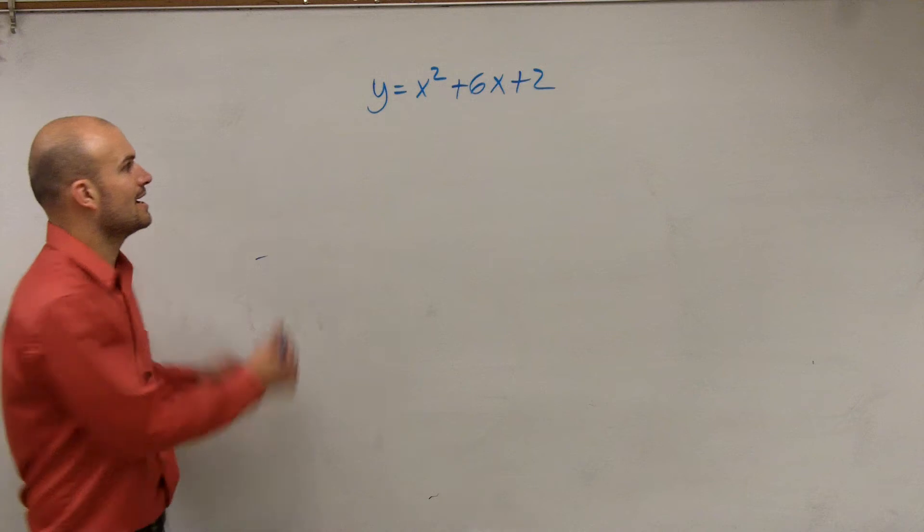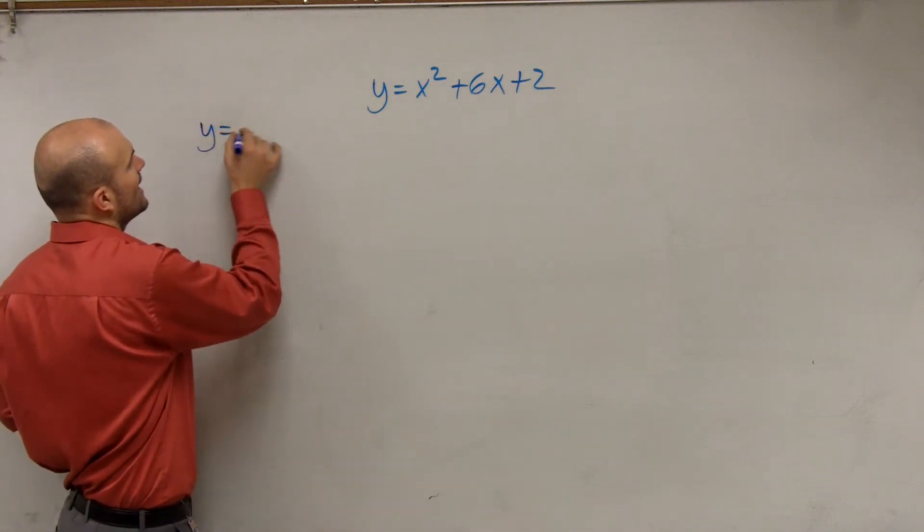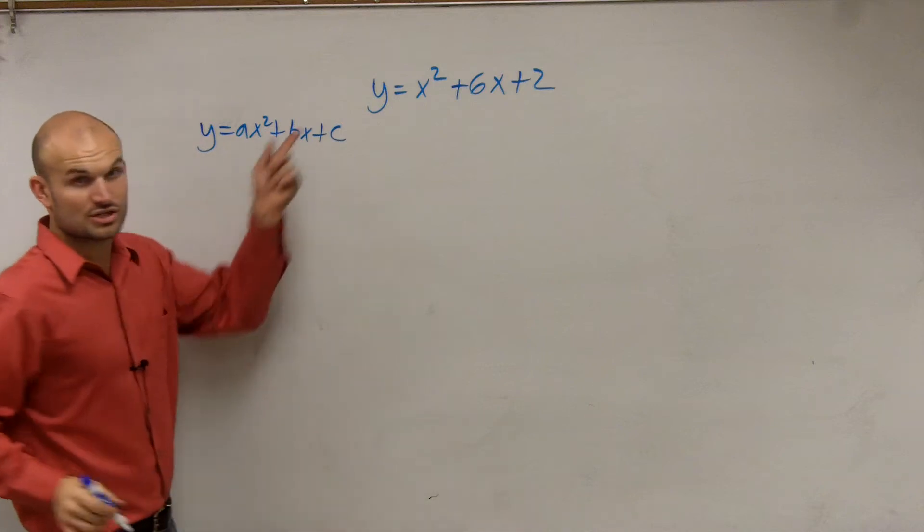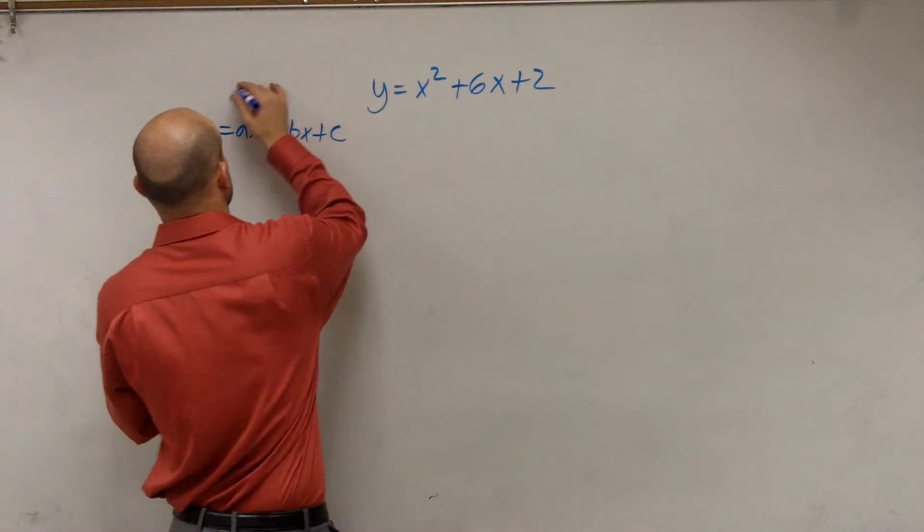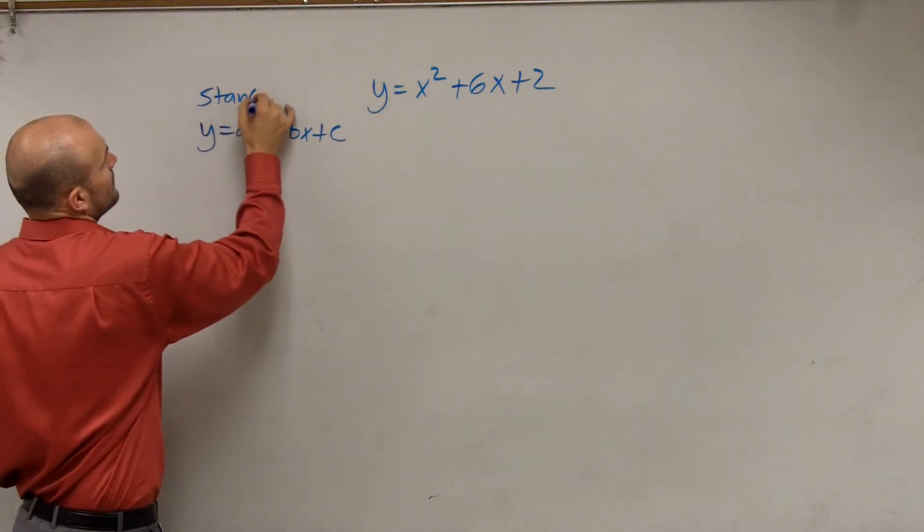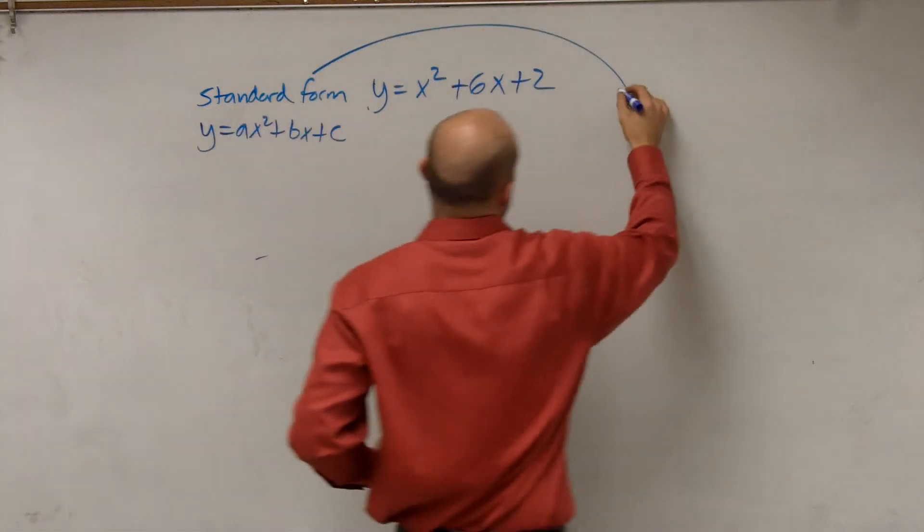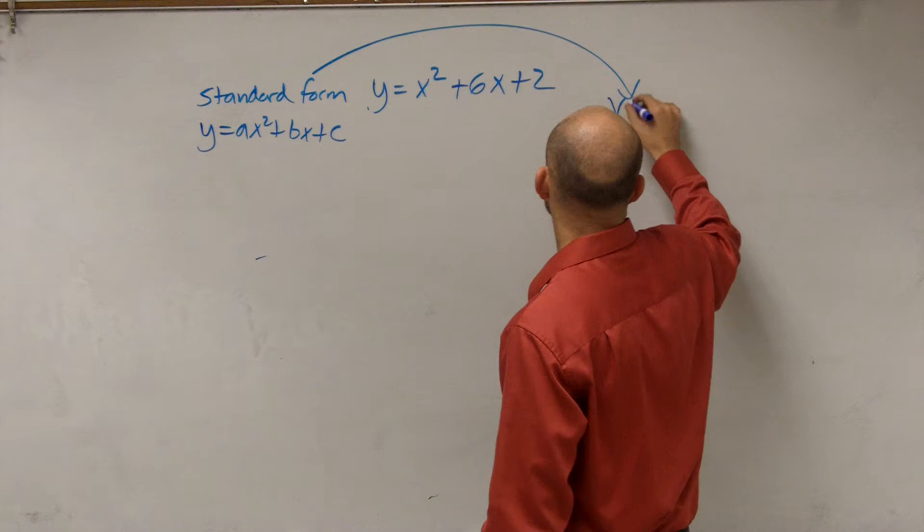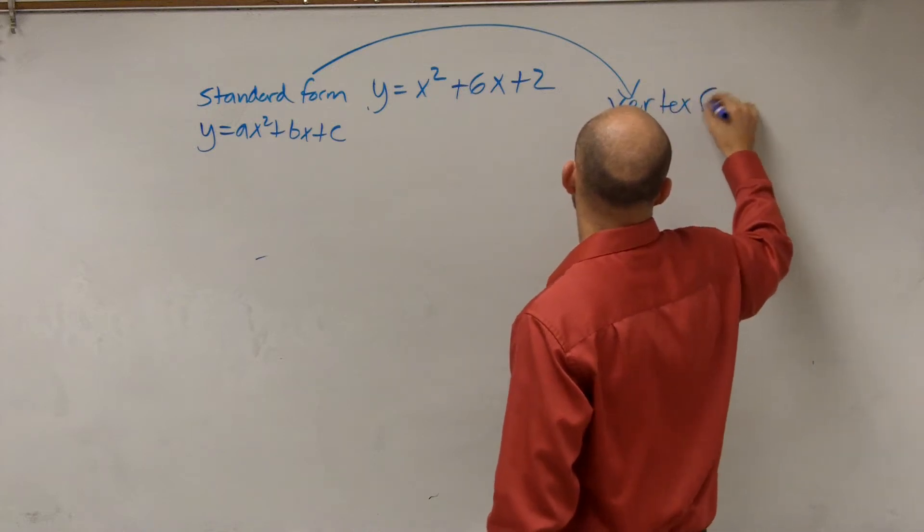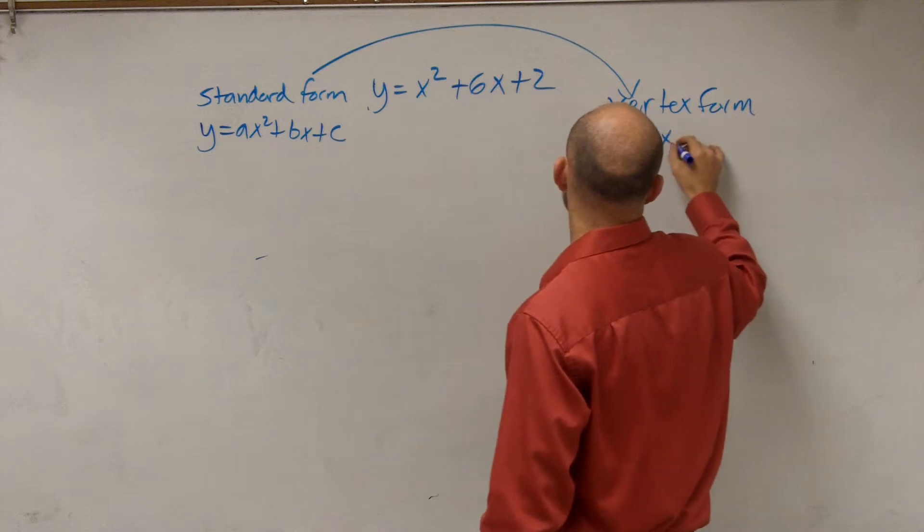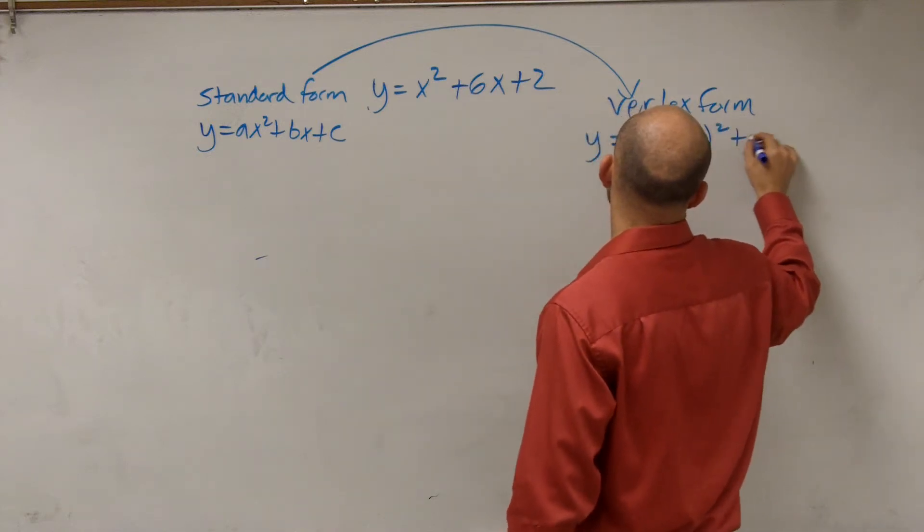So what we're trying to work on is going from y equals ax squared plus bx plus c, which this equation is in. This is what we call standard form. And we're going to try to go all the way over to what we call vertex form. So vertex form is y equals a times x minus h squared plus k.